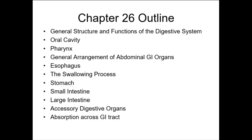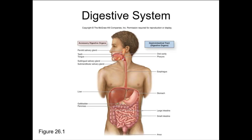We'll talk about the anatomy of the digestive system, starting from the oral cavity and working our way down: esophagus, swallowing process, stomach, small intestine, large intestine, and accessory organs. The liver, gallbladder, and pancreas are all considered accessory organs. Liver is a huge topic for pathophysiology, so we'll do a little extra with that. Then we'll cover absorption across the GI tract.